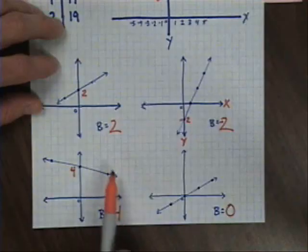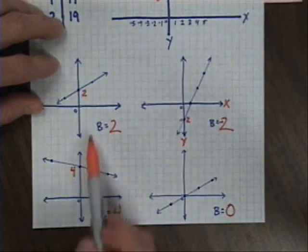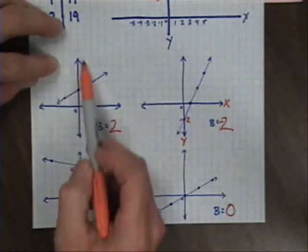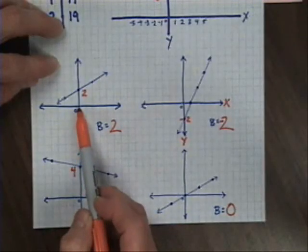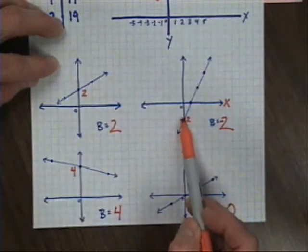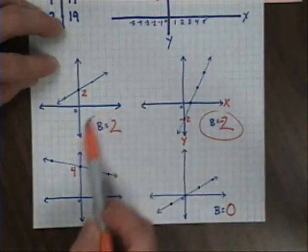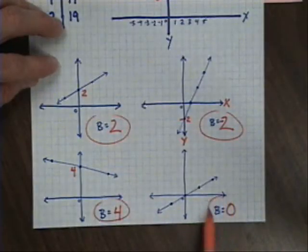So as you can see, the y-intercept can be easily found by simply finding out where your line crosses the y-axis. Count up or down from your origin, and that number will be your y-intercept.